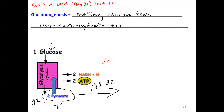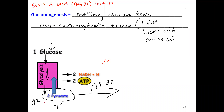If it's not carbohydrate, it can't be glycogen — it has to be something else. It could be from lipids; you can make glucose from lipids. You could make glucose from lactic acid. You can also make glucose from protein amino acids. Right now this is just a vocabulary word for you.